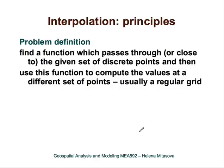So what are the interpolation principles? How can we precisely define the problem beyond converting scattered points to a regular grid? We are trying to find a function which passes through or close to the given set of discrete points, and then we use this function to compute the values at a different set of points.